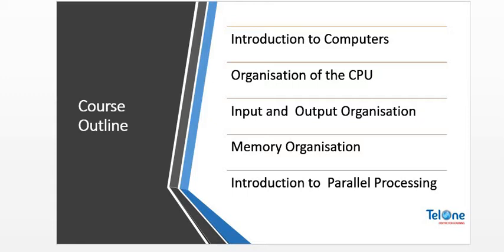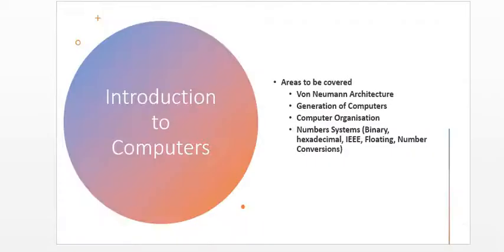Our course outline covers five main areas. We will try to reintroduce what a computer is — I know you've already done this in your first semester when you did Computers, Drawing and Communication. Then we will look at the organization of the CPU, input and output organization, memory organization, and then parallel processing.